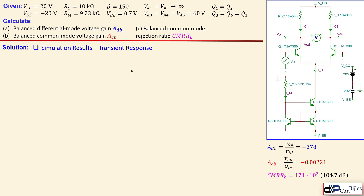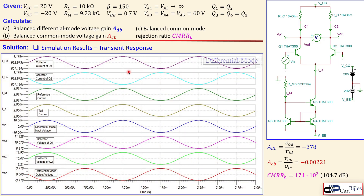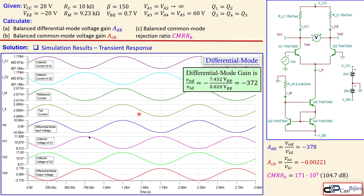The transient response provides time-domain information. For differential mode, the input is a 10 mV peak sine wave at 1 kHz. The differential mode output voltage shown in red is inverted and larger in amplitude. Calculating peak-to-peak: 3.716 minus (-3.716) = 7.432 V peak-to-peak, divided by 0.02 V peak-to-peak input, gives a gain of -372 — very close to our calculated -378.